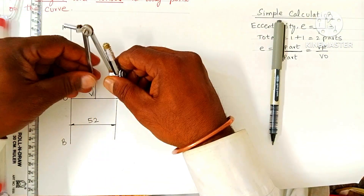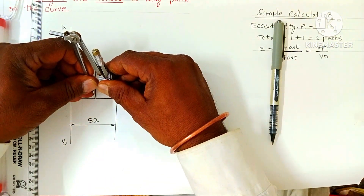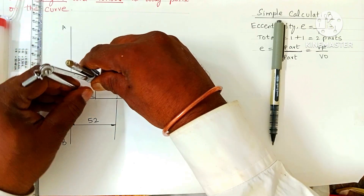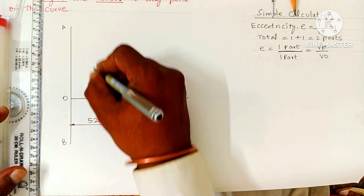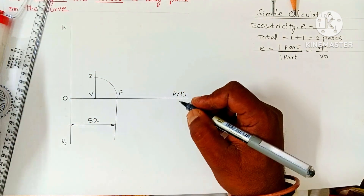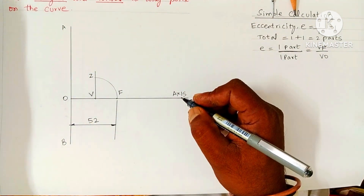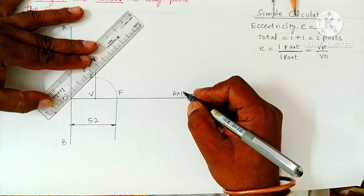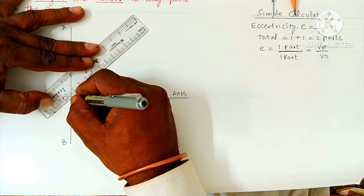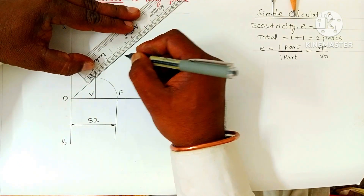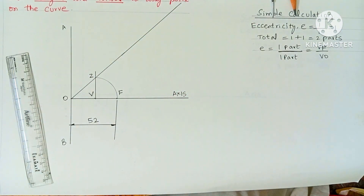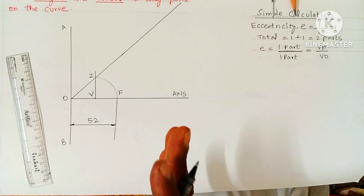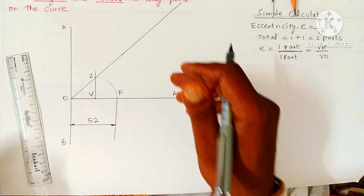With V as center and VF as radius, draw an arc upward. Where this arc intersects the vertical line passing through V, mark that point as Z. Join O and Z and extend the line further, using a roll-on scale or freehand.